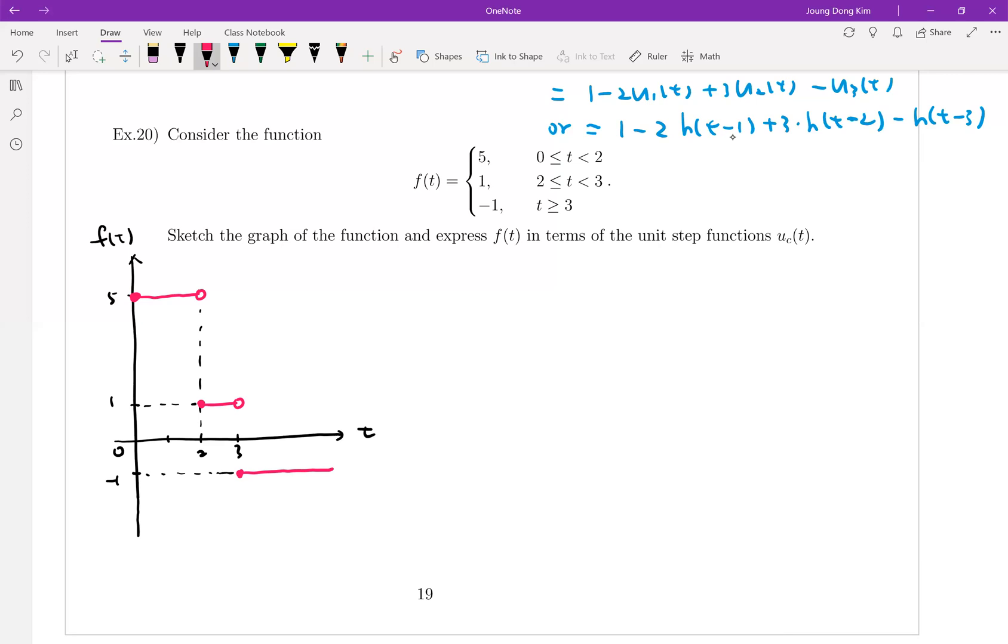Also, we can easily find this function in terms of the unit step function. Let's do it. So this function is equal to 5 between U_0(t) minus U_2(t), right? And plus 1 times U_2(t) minus U_3(t), and the last one minus 1 times U_3(t).